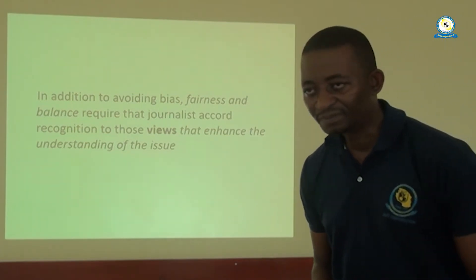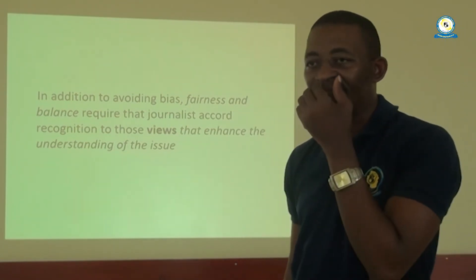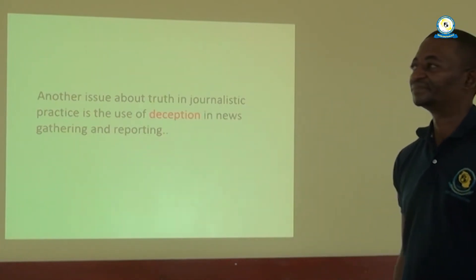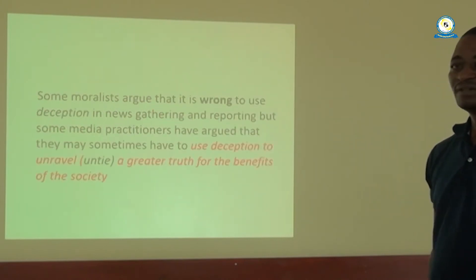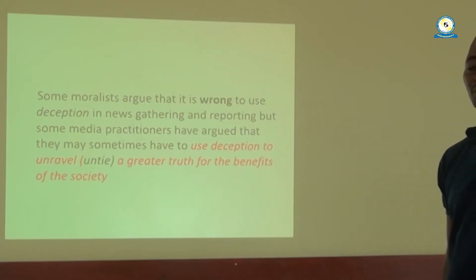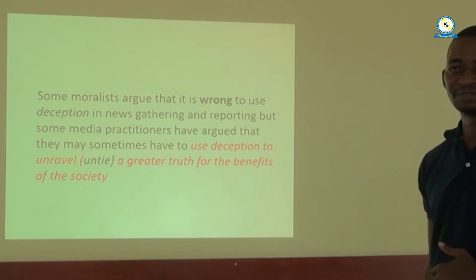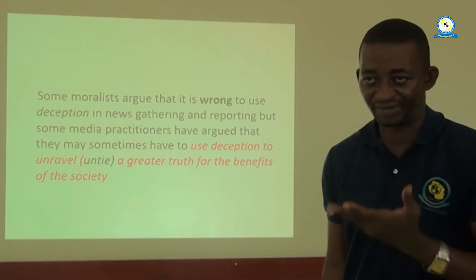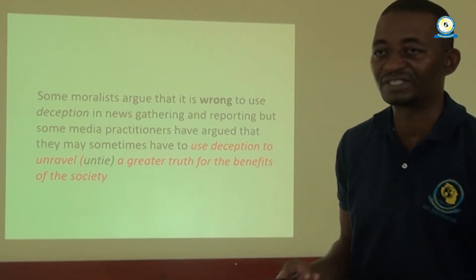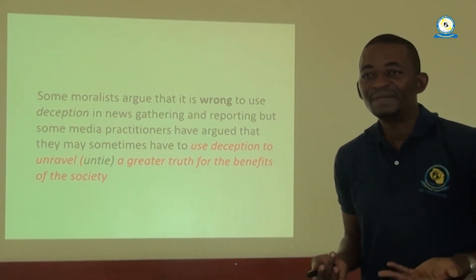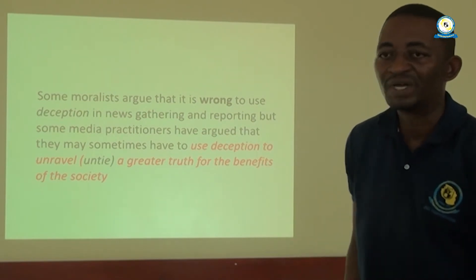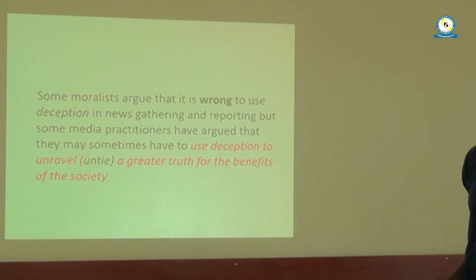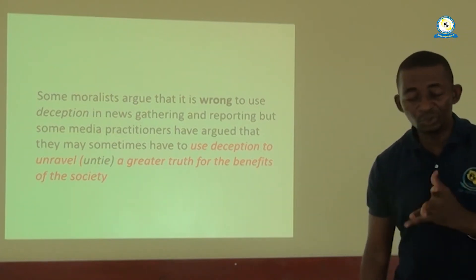Another issue about truth in journalist practice is the use of deception in news gathering and reporting. That's where we get a lot of problems. Some scholars argue that it's wrong to use deception in news gathering and reporting, but some media practitioners have argued that they may sometimes have to use deception to uncover a greater truth for the benefit of society.